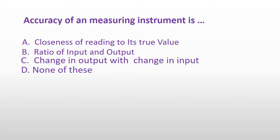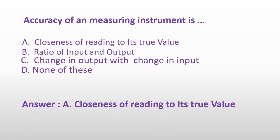Accuracy of a measuring instrument is: Option A: Closeness of reading to its true value. Option B: Ratio of input and output. Option C: Change in output with change in input. Or Option D: None of these. And the answer is Option A: Closeness of reading to its true value.